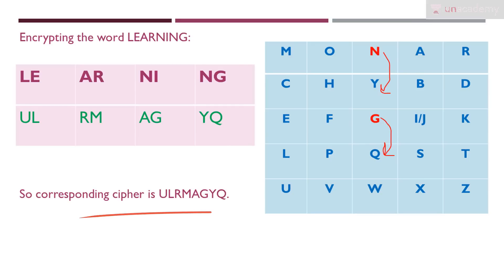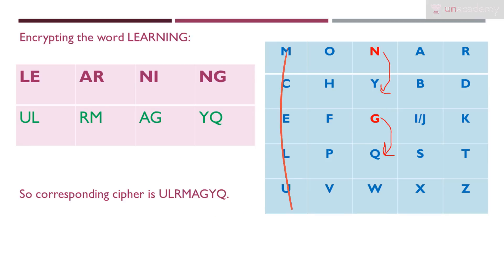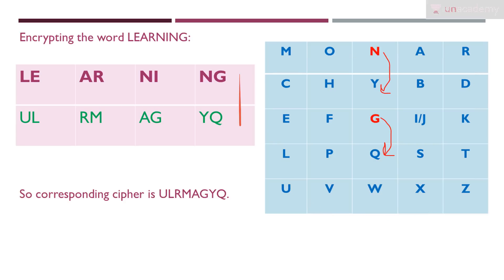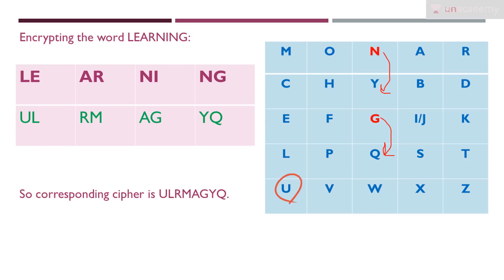For decryption, we have the cipher text and we have the keyword 'monarchy'. We construct the 5x5 matrix again and just do the reverse operation. For YQ, which came from letters in the same column, we just go up — for Y we get N and for Q we get G. For UL, also same column, we take the letter on top — for U we get L and for L we get E.